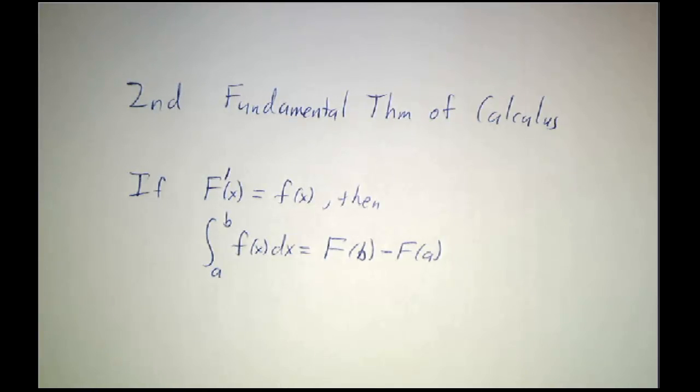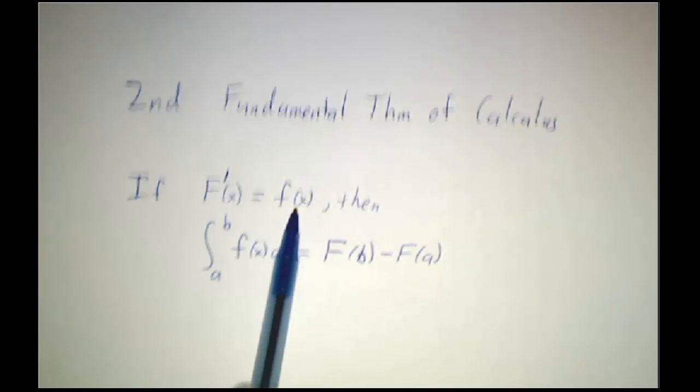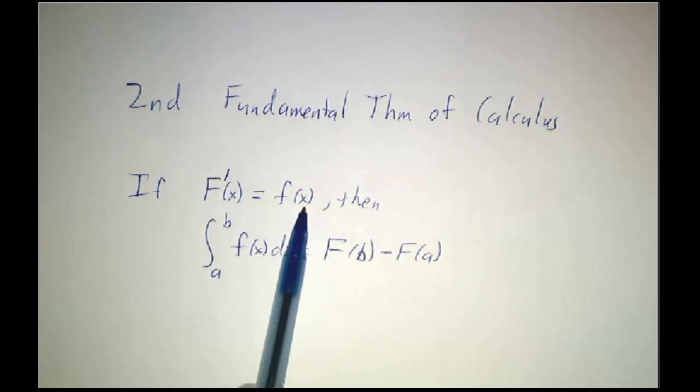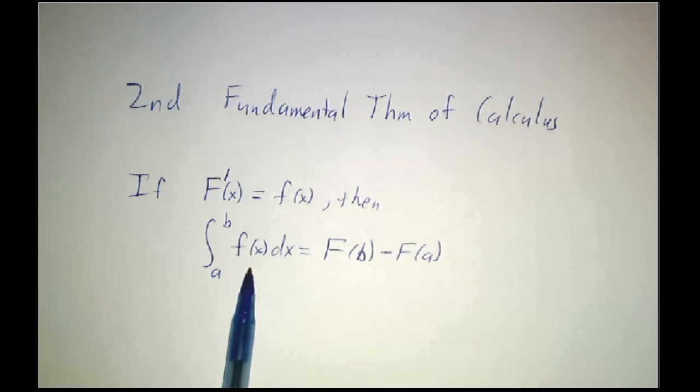Okay, last time we talked about the second fundamental theorem of calculus. That said that if F is an antiderivative of f, in other words, if the derivative of F is f, then computing definite integrals of f is easy. To get the definite integral from a to b, you just apply F at the endpoints. That's really useful because the definition of this is the limit of a sum and it can get really ugly. Finding an antiderivative and plugging it in is much, much easier.